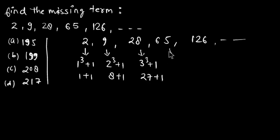So the next term will be 4³ plus 1, 64 plus 1 is 65. The next term will be 5³ plus 1, so 125 plus 1 is 126. So the next term will be 6³ plus 1, so it is 216 plus 1, what I got? 217. So option D is the right answer.